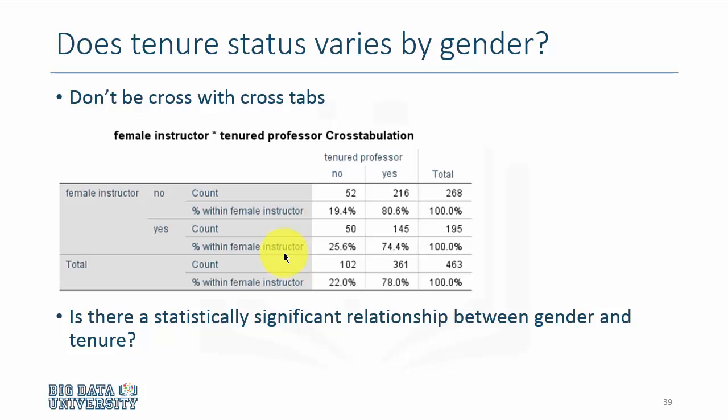What you see here is that courses taught by females, 25% of the courses were taught by females who were not tenured compared to 19% of the courses taught by males who were not tenured. And the question is, are these differences 19% and 25% statistically significant? You can compute a statistical test.